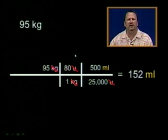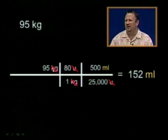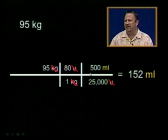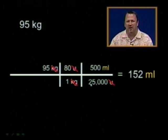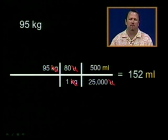And now the only unit that has not canceled out is milliliters, which is what the answer is supposed to be. So 95 times 80 times 500 divided by 25,000 is 152 milliliters.